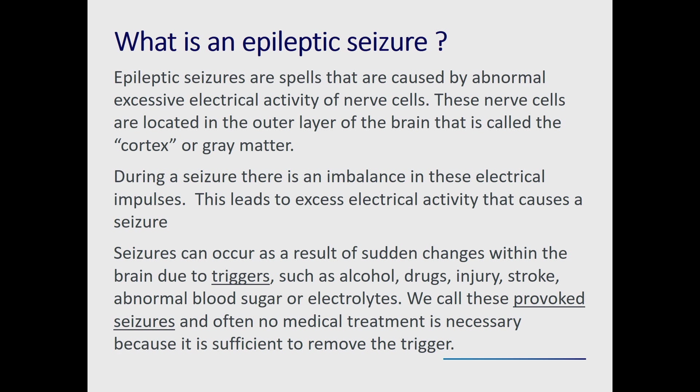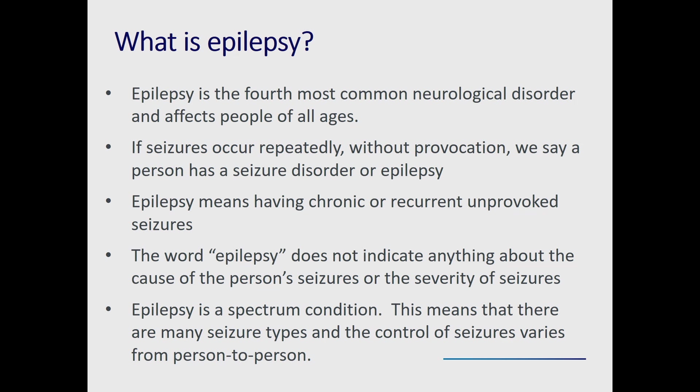Epileptic seizures are caused by abnormal and excessive electrical activity in the nerve cells, which are in the outer layer of the brain — the cortex, also referred to as gray matter. During a seizure there's an imbalance in these electrical impulses. Seizures can also result from sudden changes in the brain due to triggers such as alcohol, drugs, injuries, strokes, abnormal blood sugar, and electrolytes. These are called provoked seizures, and often no medical treatment is necessary because the treatment is removing the trigger.